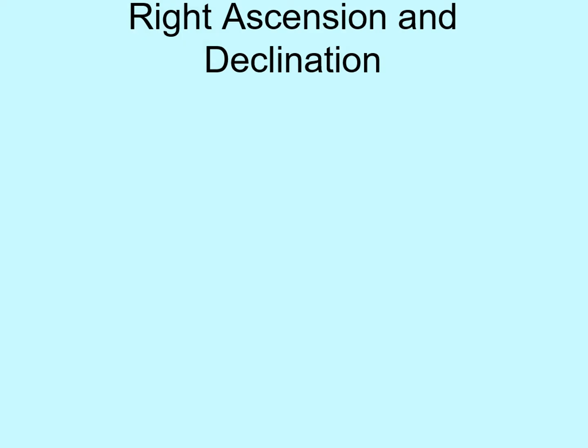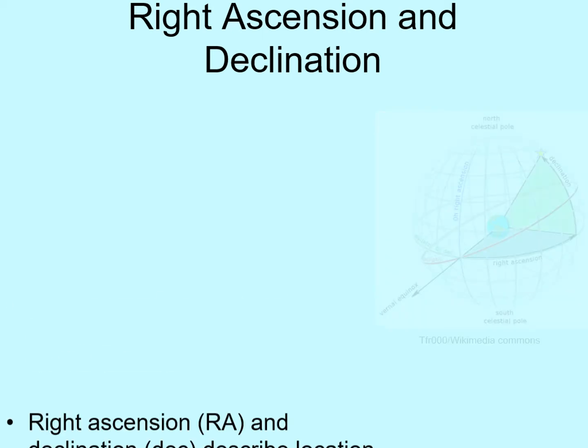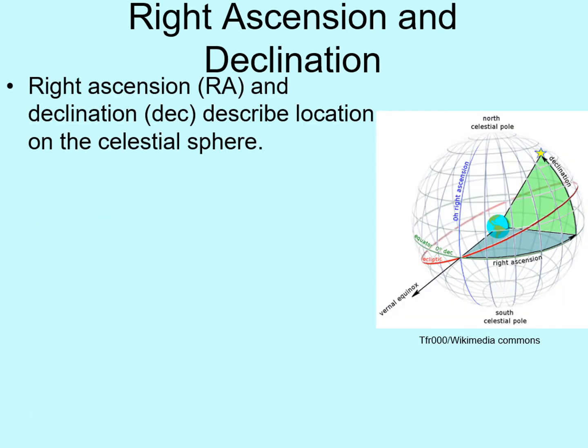Now we're going to look a little more deeply into the celestial sphere. We can describe where an object in space is on this sphere using a coordinate system called right ascension and declination. These coordinates are similar to longitude and latitude on the Earth's surface. If we know both, then we can say exactly where a star, galaxy, or other celestial object is in the sky.